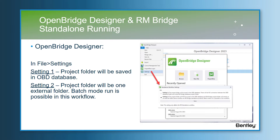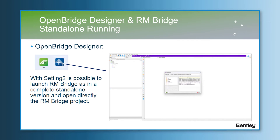With setting two, the user has the possibility to save the RM bridge project in one external folder. With this option, the user can run in batch mode too. With setting two, the user can create one shortcut for RM bridge and enter automatically in the program model with a double click. The user needs to have OBD open at the same time for licensing purposes.